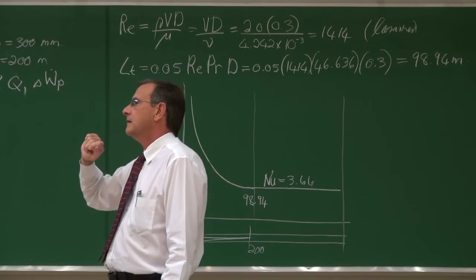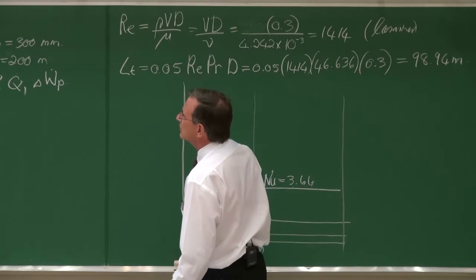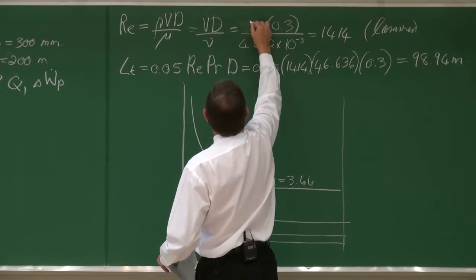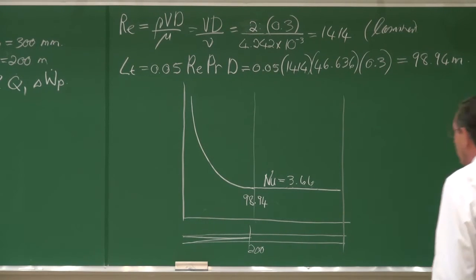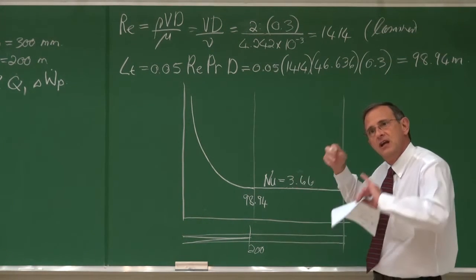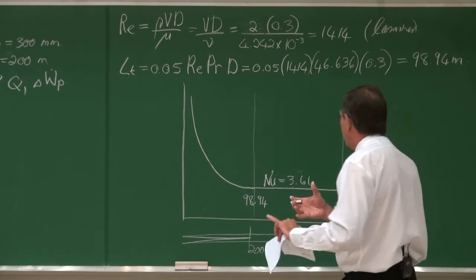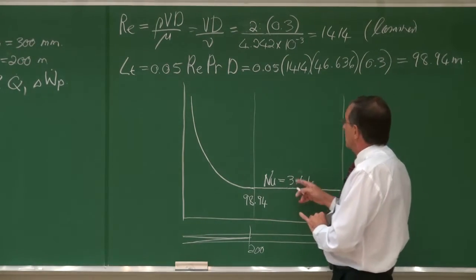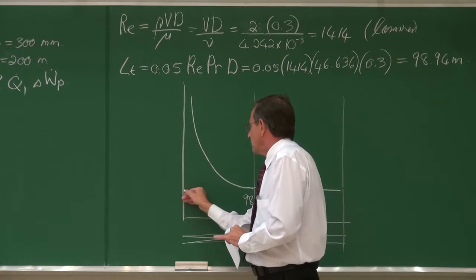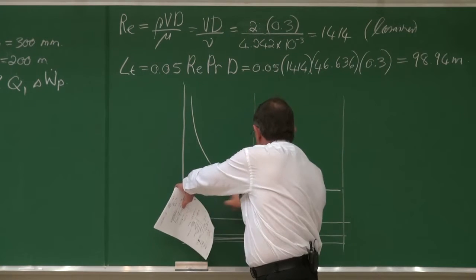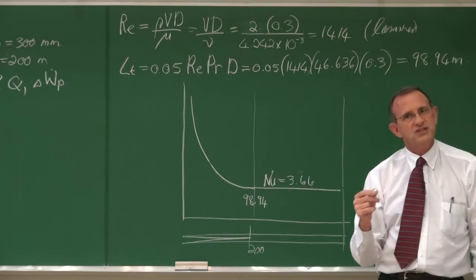The inlet velocity is confirmed as 2 m/s. This principle is important: if the tube were only 98 mm long, the flow would be almost fully developed throughout and we could immediately use Nusselt = 3.66. But in our case, the entrance region effects are significant.